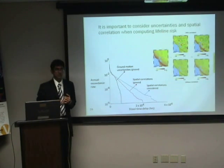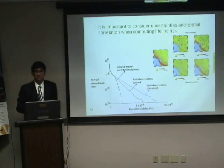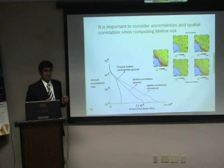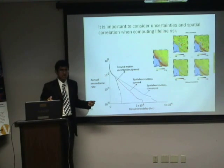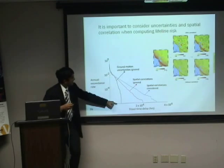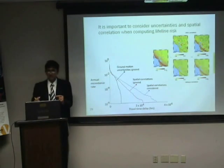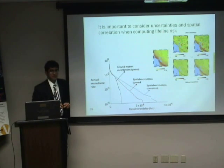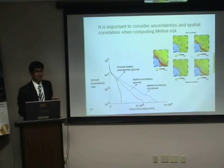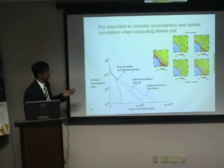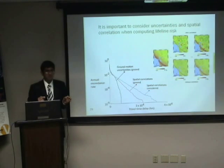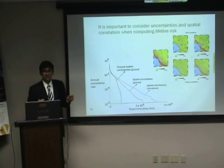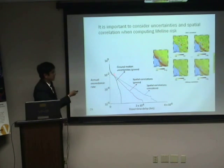A lot of people in practice still use deterministic ground motions — they sort of ignore the epsilon and eta terms and just use the median prediction. To answer whether this works, we repeated the risk analysis assuming residuals equal to zero, getting the black line, versus the blue line which considers residuals. There is a fair amount of difference between the two cases, especially in the tail. This shows that if you want to model the tail well, you can't ignore the uncertainty about the median predictions. For this network, when spatial correlations are also ignored, you get a red line somewhere in between — showing it's important to consider both the uncertainties and spatial correlations in order to compute tail risks accurately.